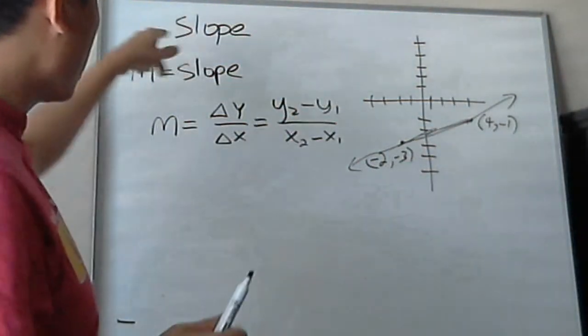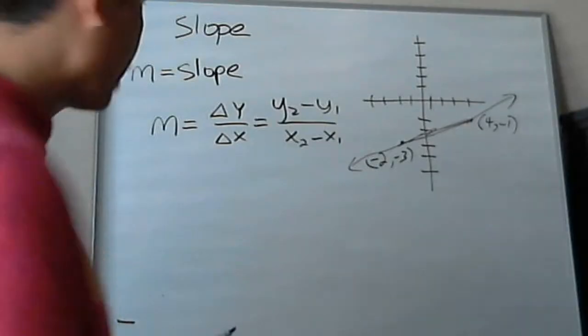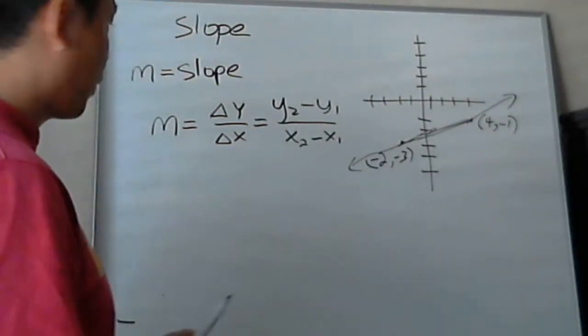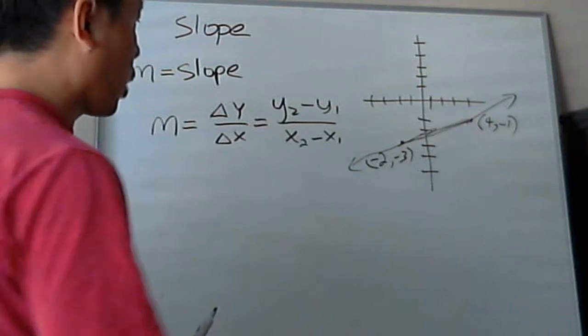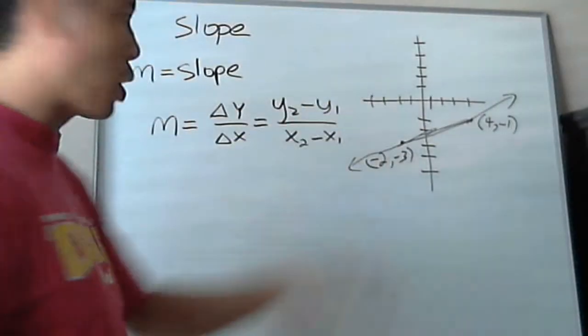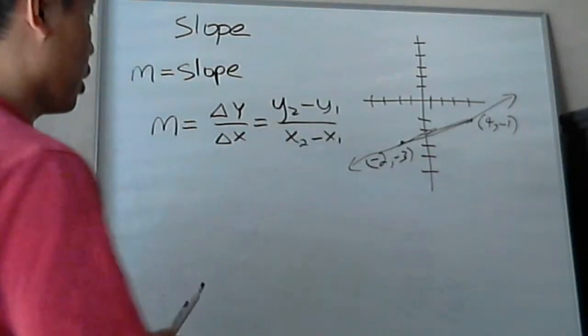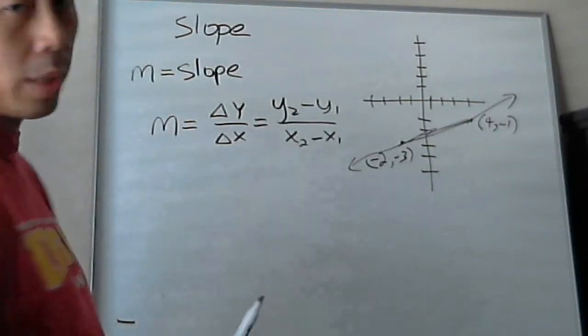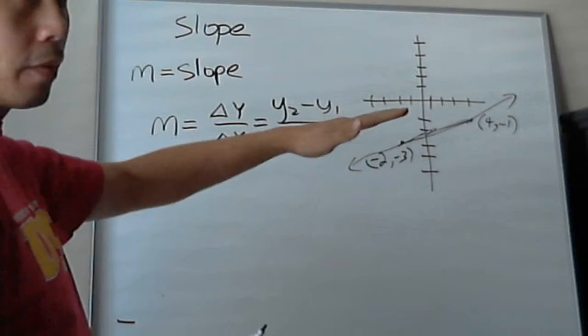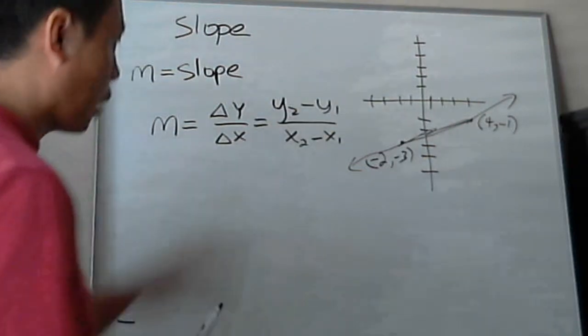So our next plan is about slope, the idea of slope. It's very important when you're working with linear equations, anything to do with lines, straight lines. Slope tells you a lot of information about what direction a line is going and how curvy it is, or how slanted it is.